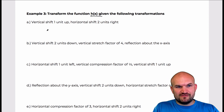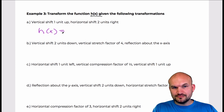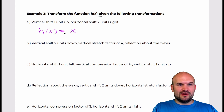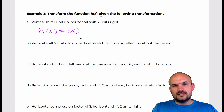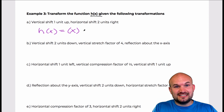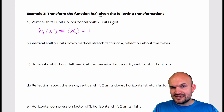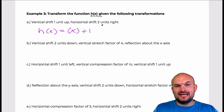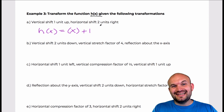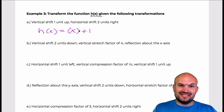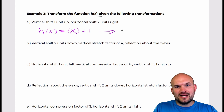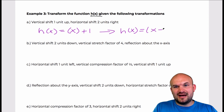So if I'm given a function h of x and I want to write that function with a vertical shift of up 1, I need to add a 1 on the outside. If I'm going to have a vertical shift of 2 units to the right, that means I need to subtract 2 inside the function. So h of x is going to equal h of x minus 2, and then plus 1.